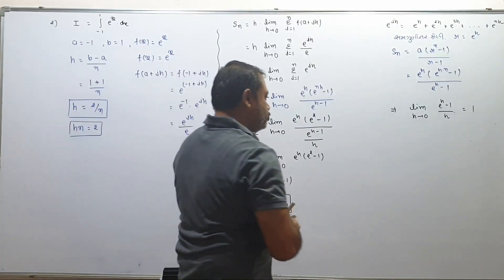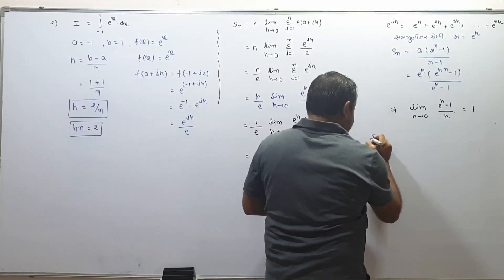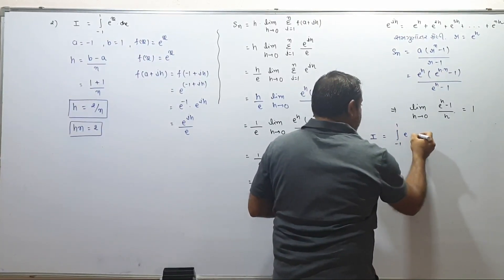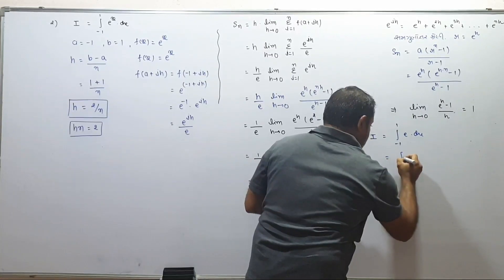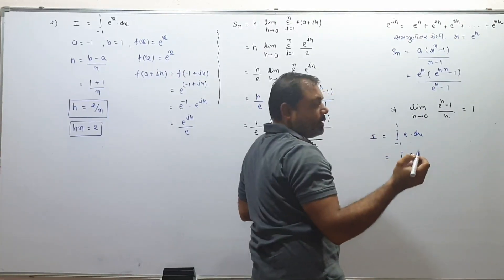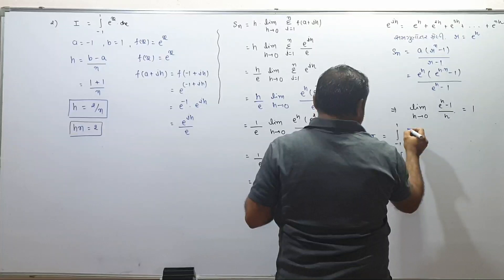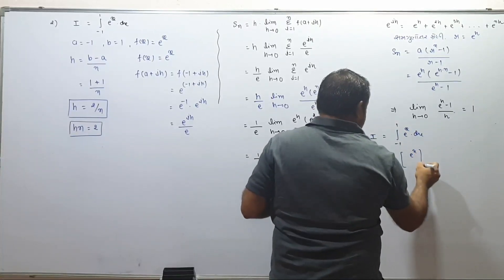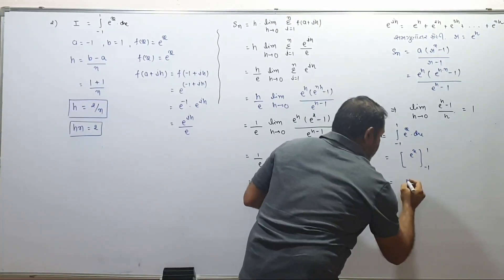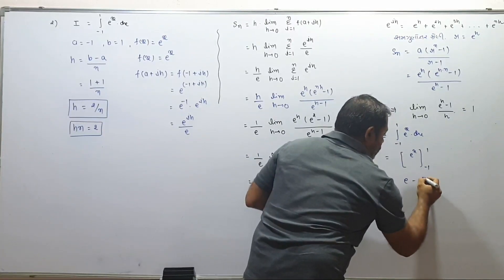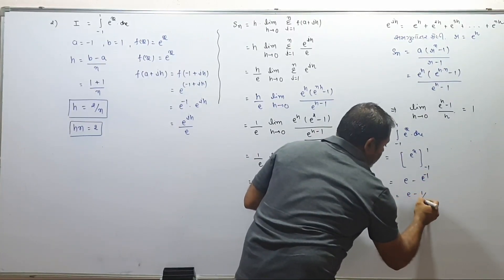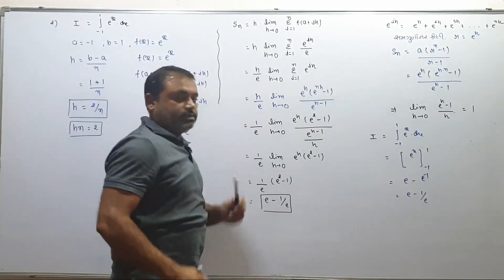I will show you the shortcut. I is equal to integral from minus 1 to 1 of eˣ dx. Antiderivative is e^x evaluated from minus 1 to 1 equals e^1 minus e^(minus 1) equals e minus 1/e. This is the answer. Clear?